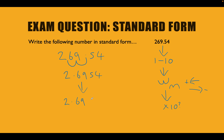So let's write this out in standard form: 2.6954 times 10 to the power of 2. To recap: we started with 269.54, turned it into a number between 1 and 10 by moving the decimal point twice to the left, giving us 2.6954. Moving the decimal point to the left gives a positive power of 10, and the power equals how many times we moved it — in this case 2. So the answer is 2.6954 times 10 to the power of 2.